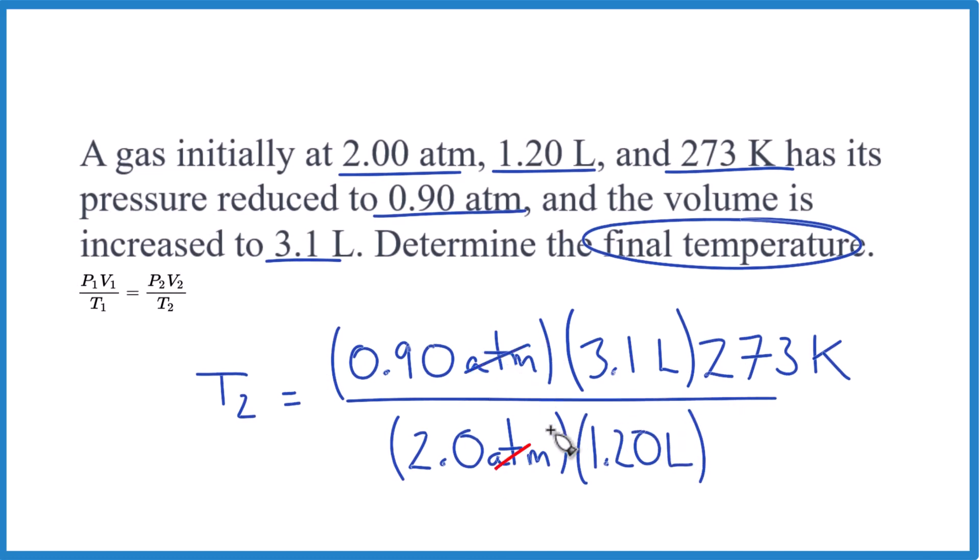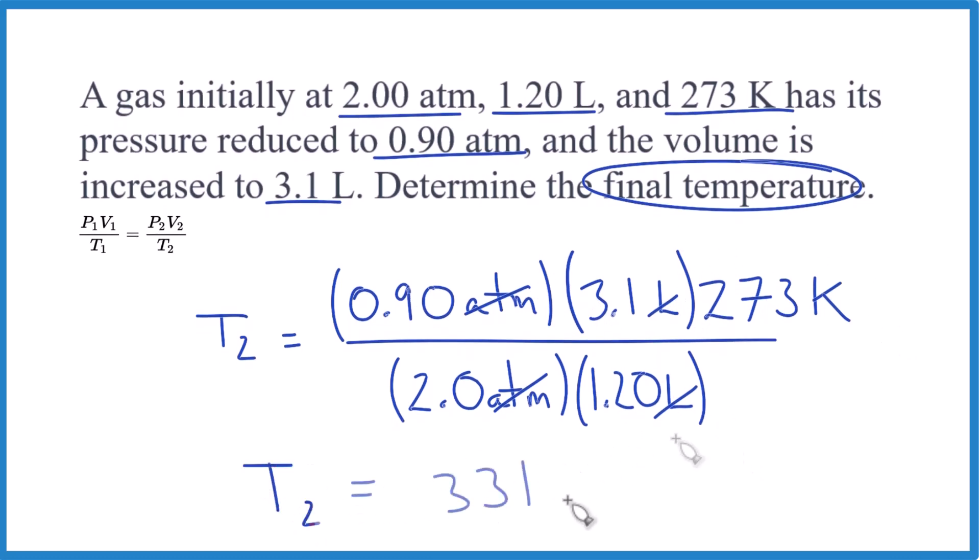Now you should note atmospheres on the top and bottom, liters top and bottom, and we have Kelvin - that's what we're looking for. You know you did this right when everything cancels out. If you multiply the top and then the bottom, then divide what you have for the numerator by the denominator, you end up with 331 Kelvin.